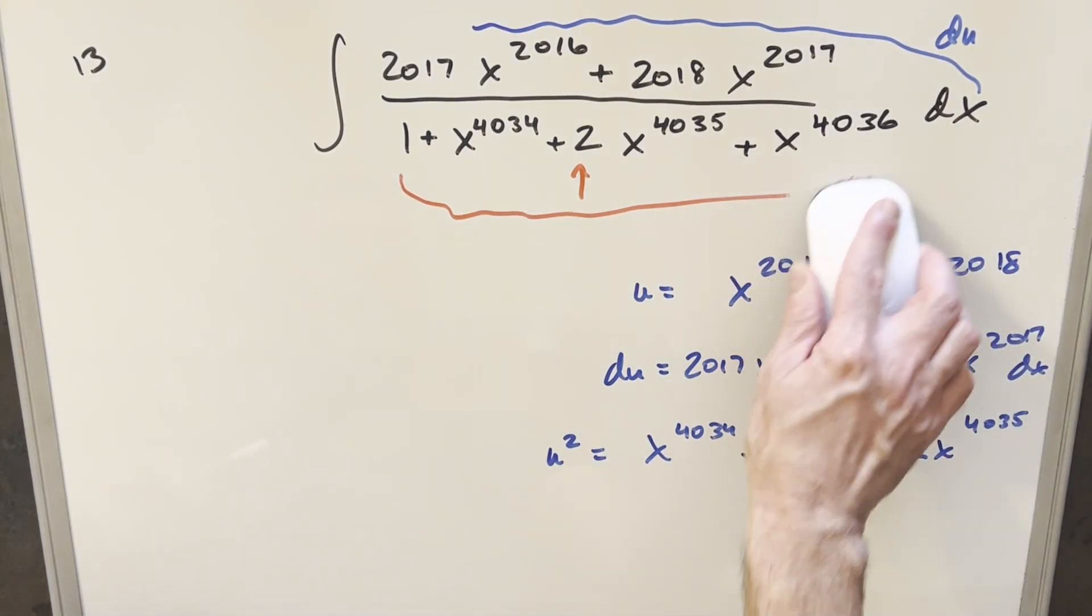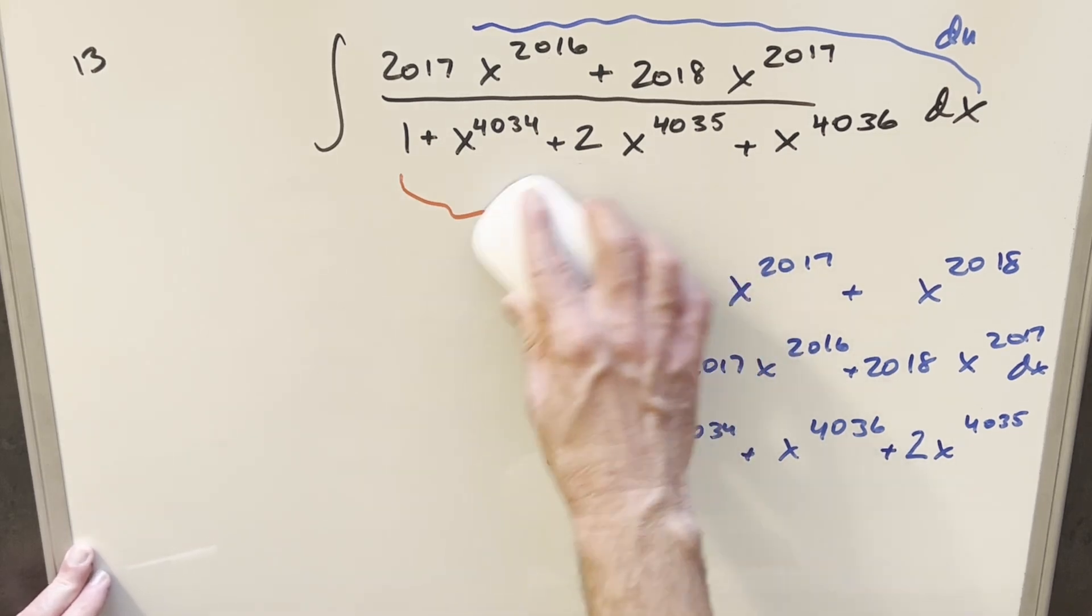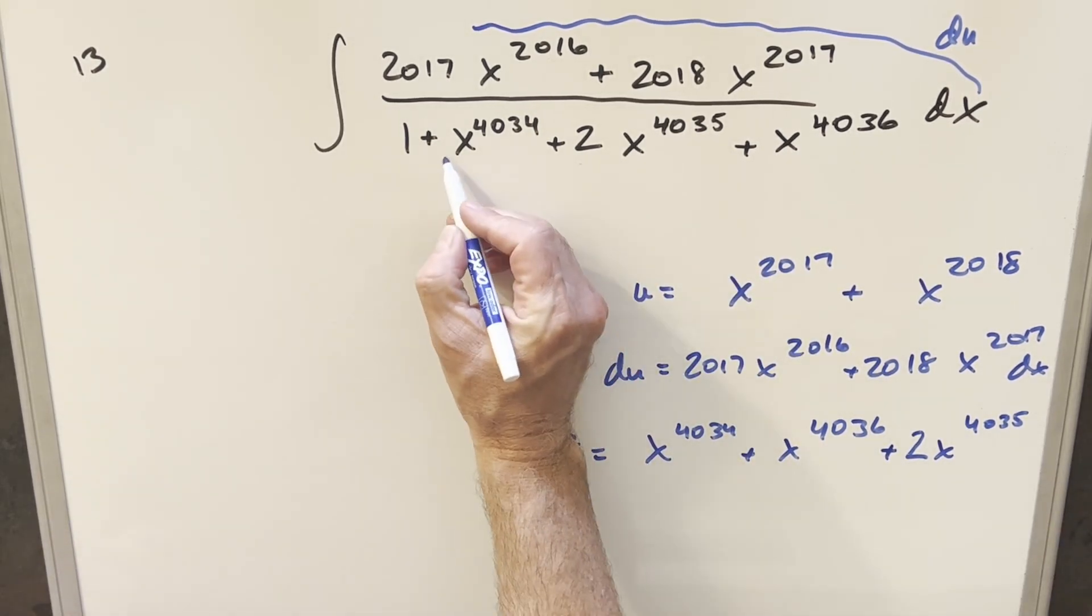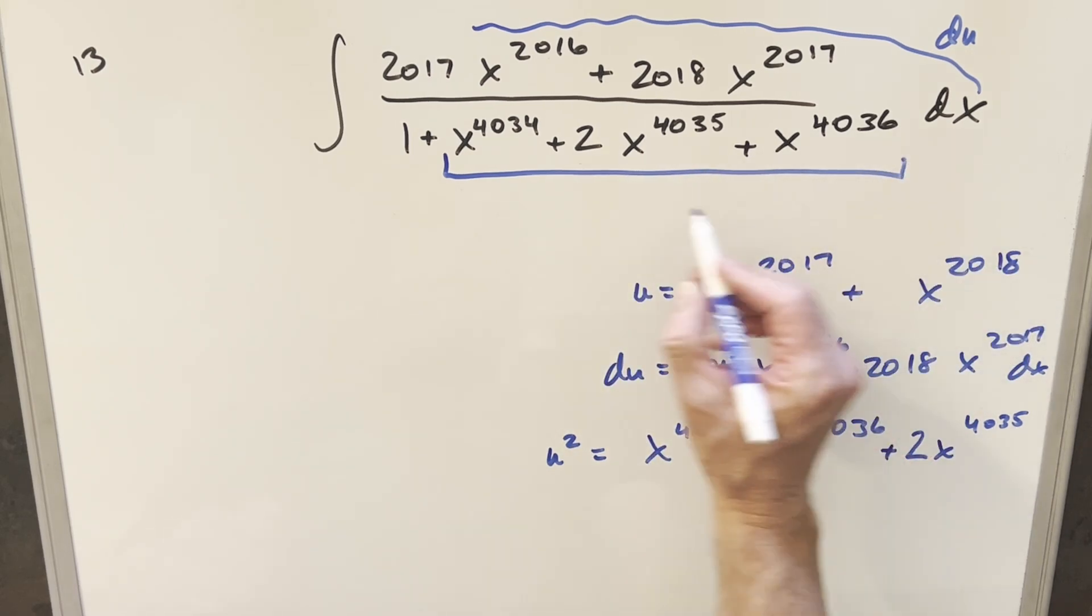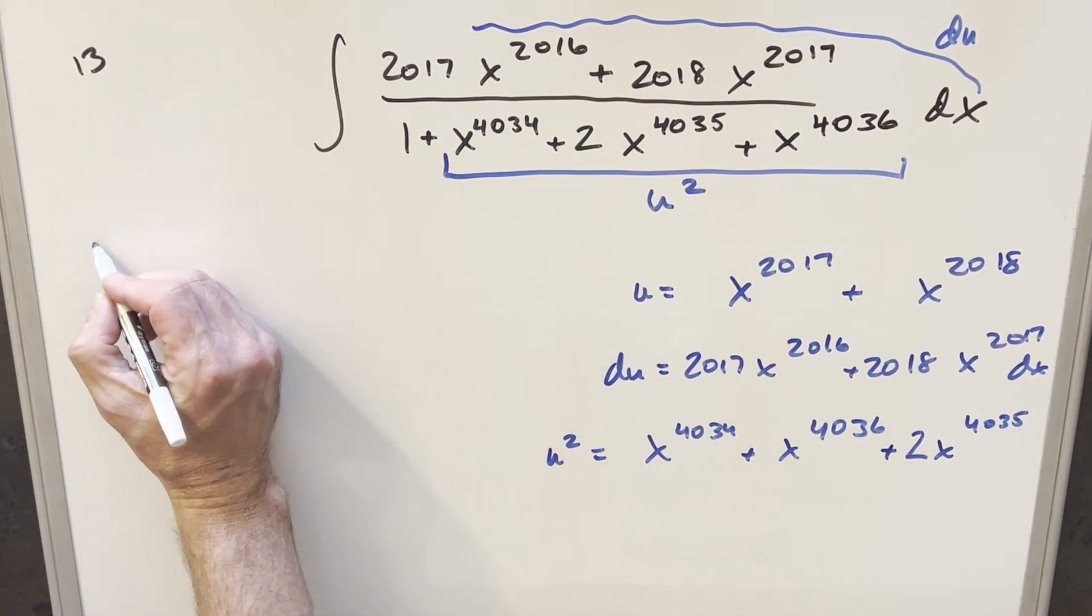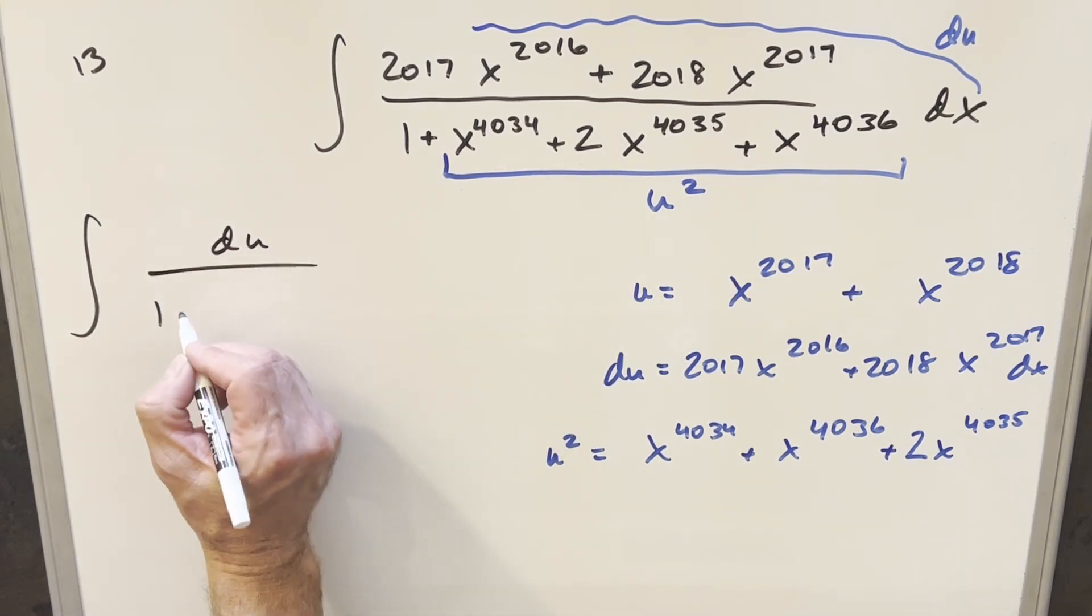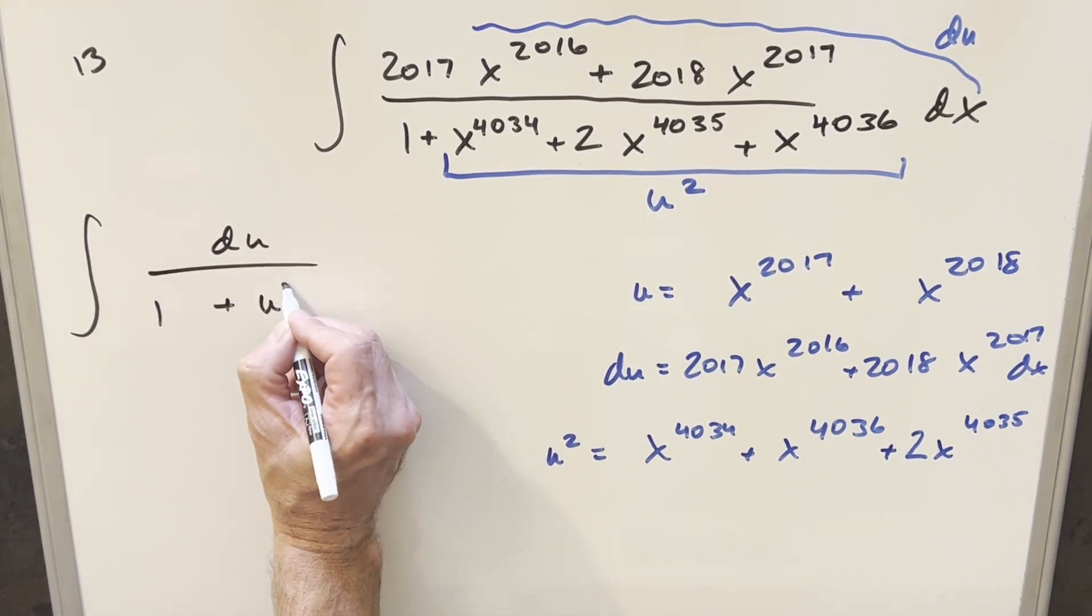This thing I was worried about originally that we couldn't factor it, I was kind of looking at it wrong because all we need to do is exclude this one right here. And then all this stuff is just going to be u squared. So now we have everything in place to do our substitution. The numerator is going to be du. We have this one, and it's just going to be plus u squared.